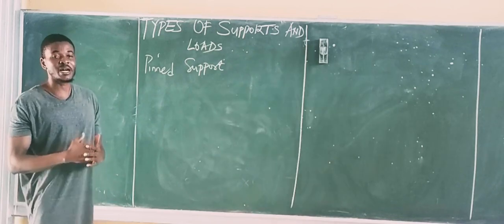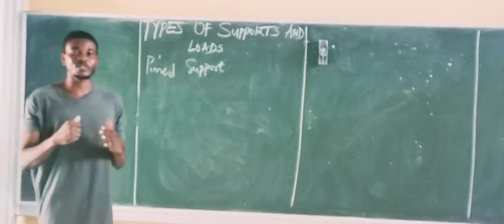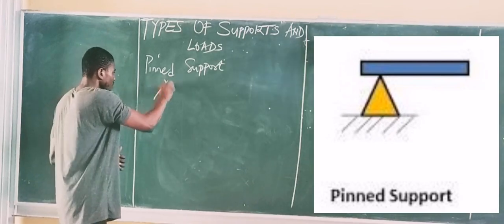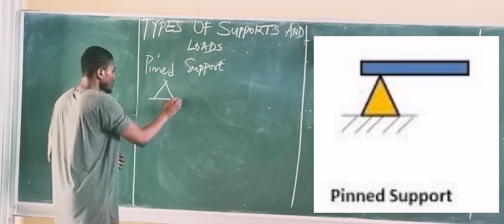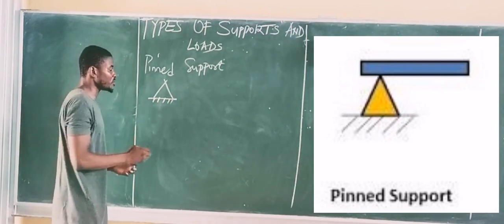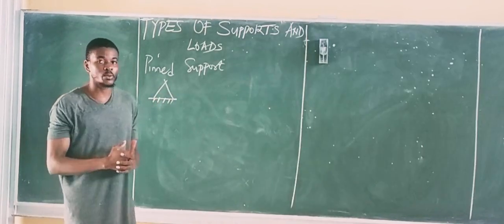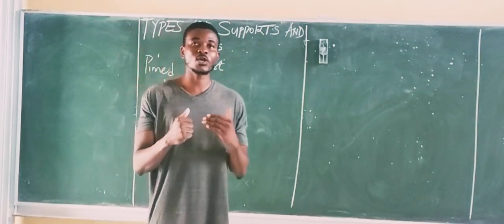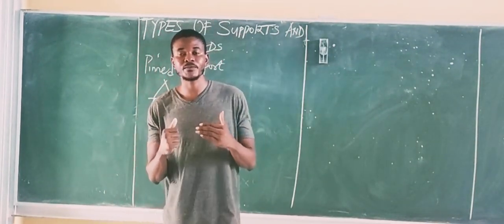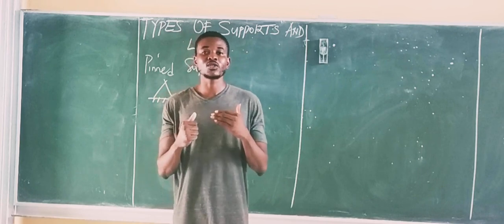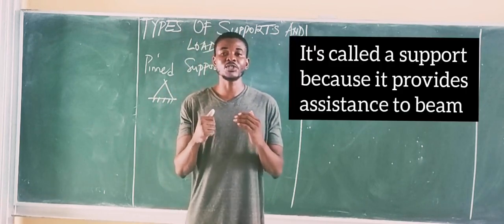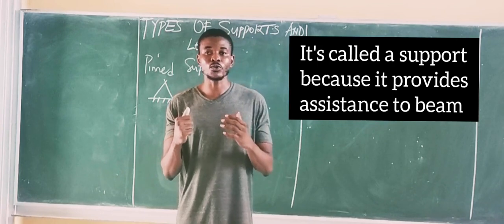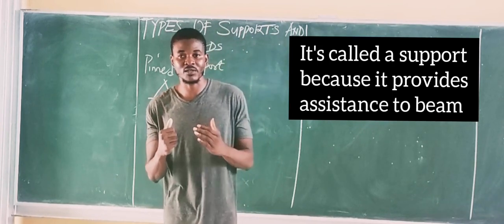The Pinned Support actually looks triangular in shape. This is how the Pinned Support looks like. It's called a support because it's usually used to support a beam or provide assistance to a beam.